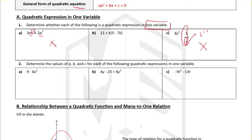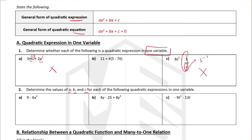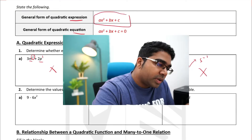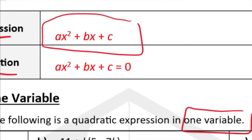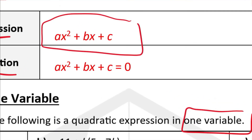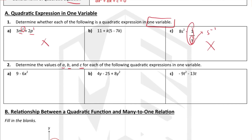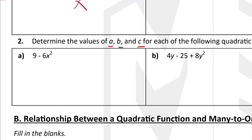Let's look at number 2: determine the values of a, b, and c for each of the following quadratic expressions. This is with reference to our general form ax squared plus bx plus c. The value a is the coefficient of x squared, b is the coefficient of x, and c is just the constant. Looking at example a, the coefficient of x squared gives us a equals negative 6 — don't forget the negative.